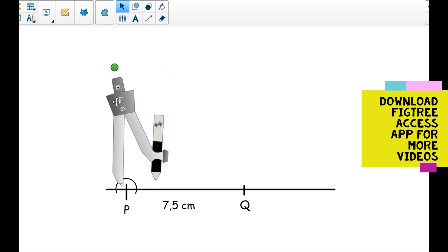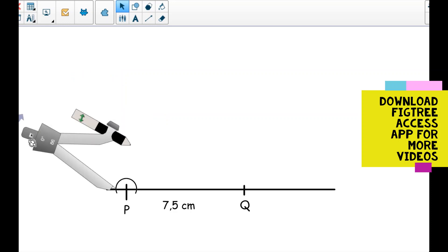I will put my needle on where the arc intersects the line. Let me put an arc here to construct 90 degrees. I will extend my distance between the pencil and the needle. So this is my first arc.